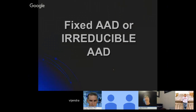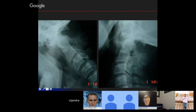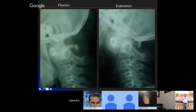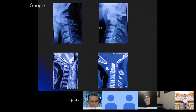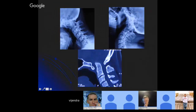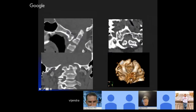Now regarding fixed or irreducible atlanto-axial dislocation: in flexion and extension the dislocation does not reduce. You can see in these pictures that even with real extension at the atlanto-axial joint it is still not reducing — so this is called fixed. Some people say it should be put on traction and then we will call it fixed. There is another entity where people say fixed atlanto-axial dislocation with basilar invagination — where the odontoid goes inside the foramen magnum. Another picture shows C2-3 fusion with C2 completely inside the C3 vertebral body against the arch of atlas — this is called basilar invagination.